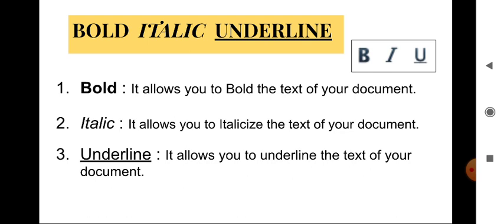Italic makes the selected text italic, allowing us to italicize the text of our document. The shortcut key is Ctrl+I. Underline allows us to underline the text of our document — it underlines or removes underline from the selected text. The shortcut key for underline is Ctrl+U.